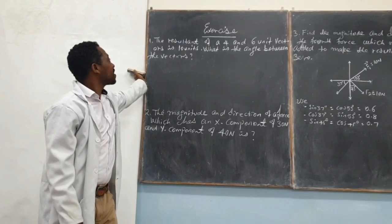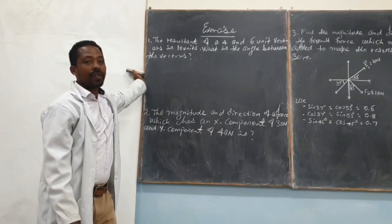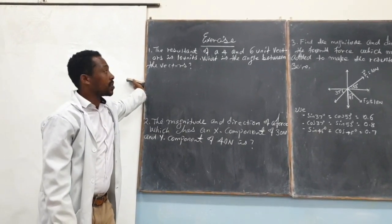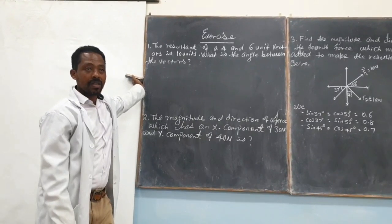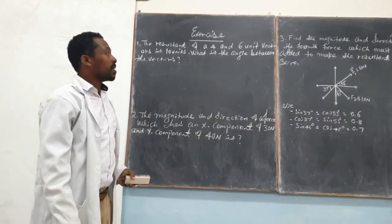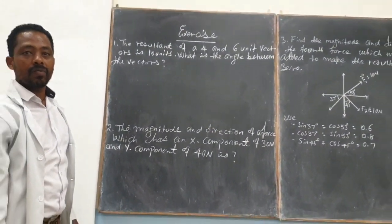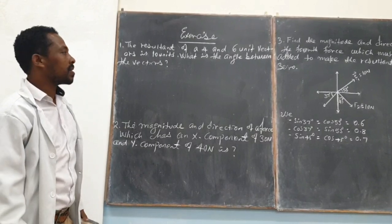Number one says the resultant of 4 and 6 unit vectors is 10 units. We are requested to find the angle between vector 4 and vector 6.